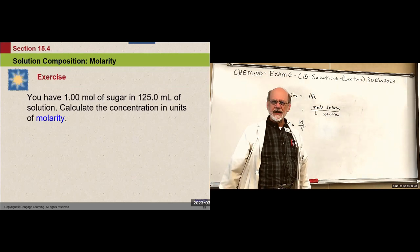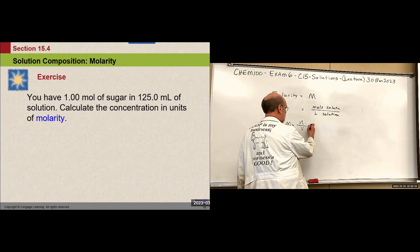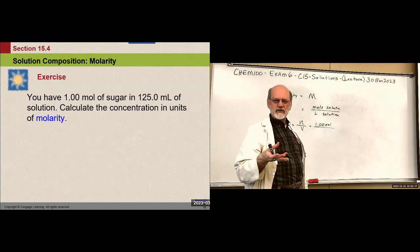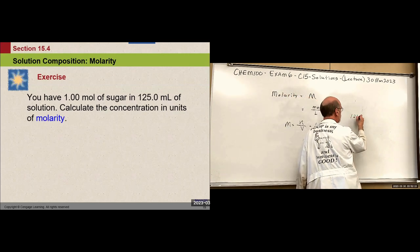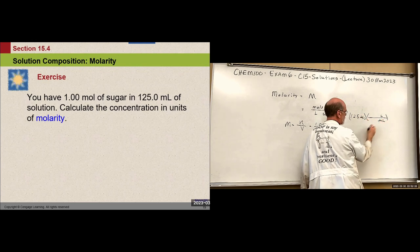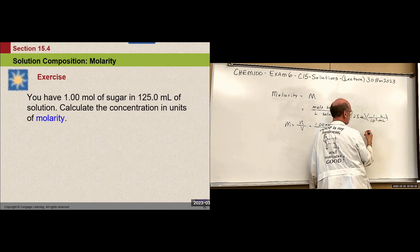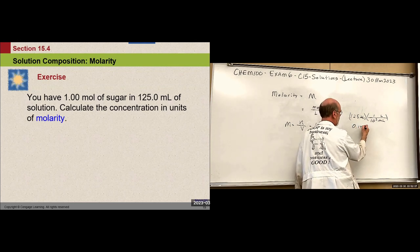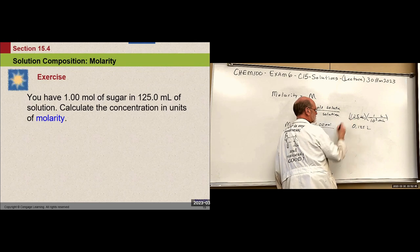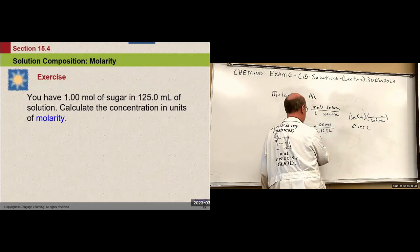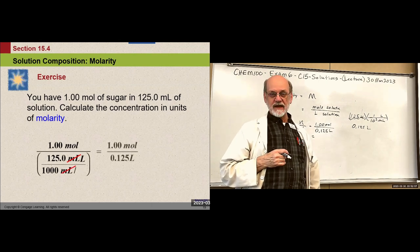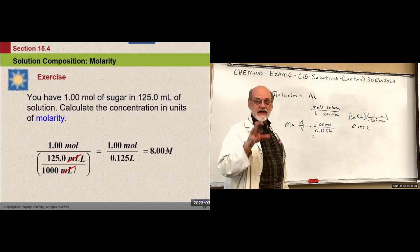Let's say we have one mole of sugar in 125 milliliters of solution. One mole of sucrose — and 125 milliliters is 0.125 liters. So divide 1 by 0.125, and we get 8 molar. This solution is 8 molar in sucrose.